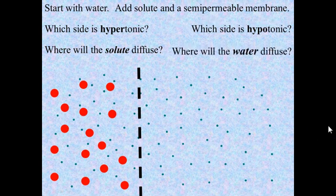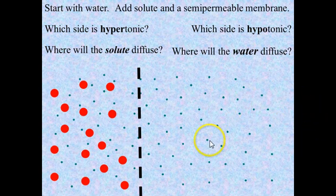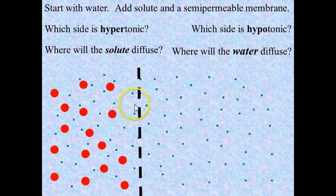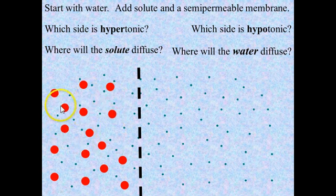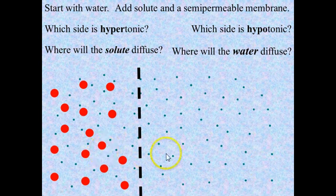So the next question is where will the water diffuse? That depends on the concentration. Another way to think of concentration is a ratio. Here we have a very high concentration of water on the right side; over on the left side we have a lower concentration of water because of the solute. So the water is going to diffuse across the membrane from the right side to the left side.